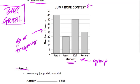The first question says: how many jumps did Jason do? Part B says: how many more jumps did Kai do than Renee, and by how much? So we have Kai and Renee to compare.